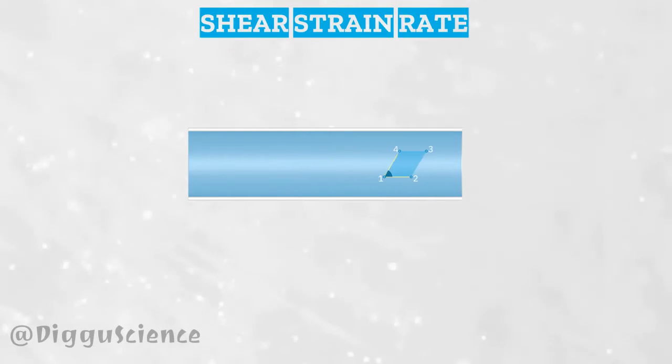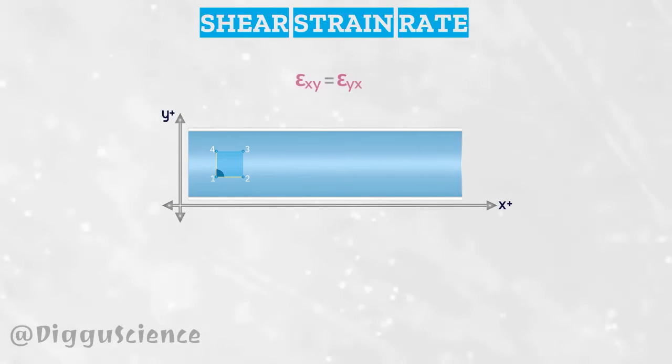The shear strain rate is also symbolized as epsilon. It's just that the subscript is different. If the fluid is in the x-y plane, then the shear strain is written as epsilon of x-y, or epsilon of y-x. These two values are the same.